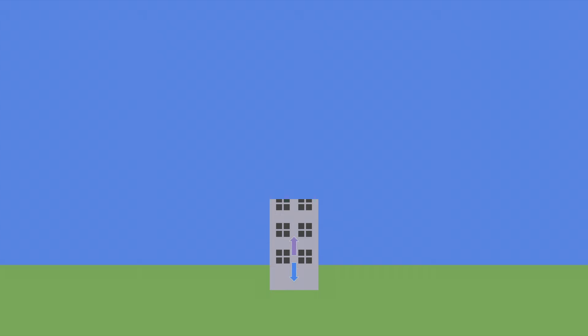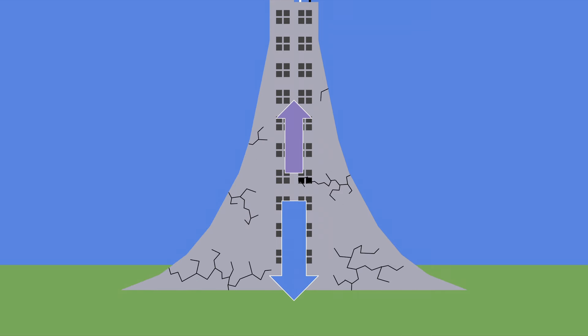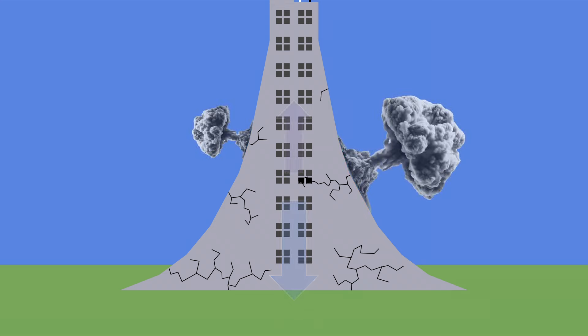As a structure gets taller, the force of gravity acting on it gets larger, so the compressive force must grow to balance it out, especially near the bottom of the structure. This requires a wider and wider base to compensate, but eventually the force grows past the compressive strength of any known material so the structure becomes infeasible.